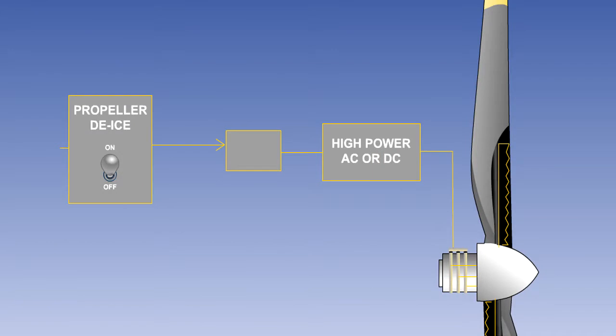Depending on the type of aircraft, the electrical power for heating the elements is either direct or alternating current.